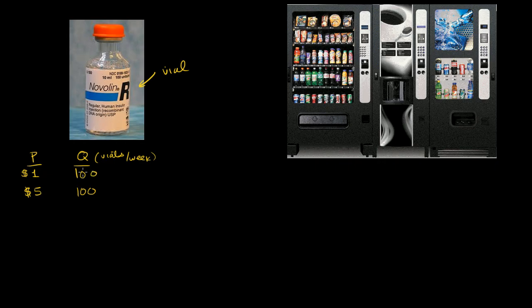Now what happens if the price went up a ton? What happens if the price went to $100 a vial? Well, it would be hard for them, but they need it to survive. So it's going to squeeze out any other expenses that they need to spend money on. And so they still will buy 100 vials a week. You could keep raising price within reason, and they would still buy the same quantity. Obviously, if you raise it to a billion dollars, then they just wouldn't be able to afford it. But within reason, they're going to buy 100 vials per week no matter what the price is. So this is an example of perfect inelasticity.